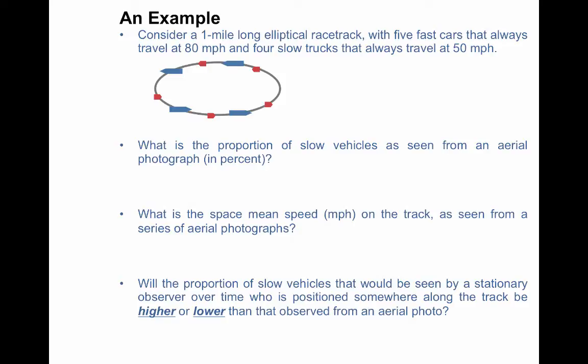So the first question is what's the proportion of slow vehicles as seen from an aerial photograph. So all you're doing is looking at that aerial photograph, and you're saying, okay, we've got nine total vehicles, and four of them are slow. So all we do is divide the number of slow divided by the total number, four divided by nine, so that's 44%.